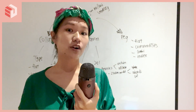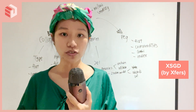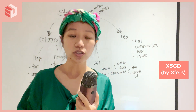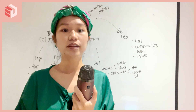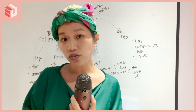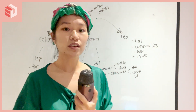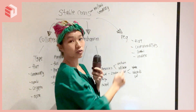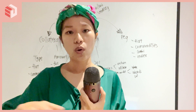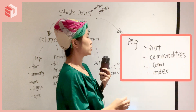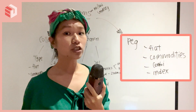Of course there are other currencies available. With SGD — Singapore dollars — you have XSGD by Xfers. With other currencies like the Swiss franc, Japanese yen, euros, and British pounds, there are assets out there creating stablecoins pegged to different fiat currencies. Why? Because it makes transactions a lot easier within the ecosystem. So that's fiat, but it's not just fiat.